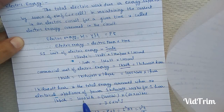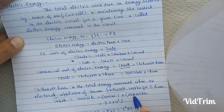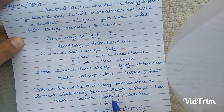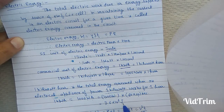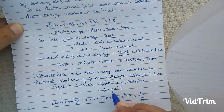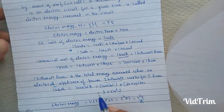Therefore, 1 kilowatt hour equals 1000 watt into 1 hour. Since 1 hour equals 60 minutes and 60 minutes equals 60 × 60 seconds, on multiplying all these, we get 3.6 × 10⁶ joules. Therefore, 1 kilowatt hour equals 3.6 × 10⁶ joule.